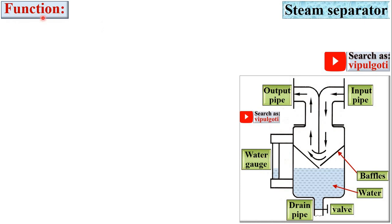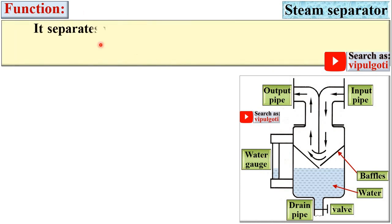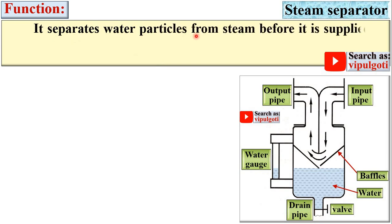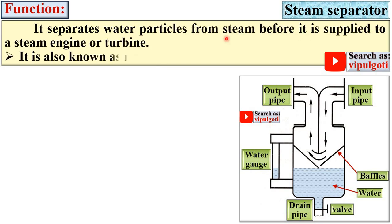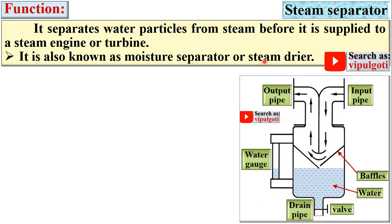Now let us start with the function of the steam separator. It separates water particles from the steam before it is supplied to a steam engine or turbine, and so it is also known as a moisture separator or steam dryer. The name itself indicates it separates moisture or water particles, or you can say it makes the steam dry.